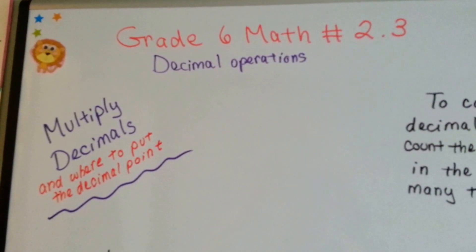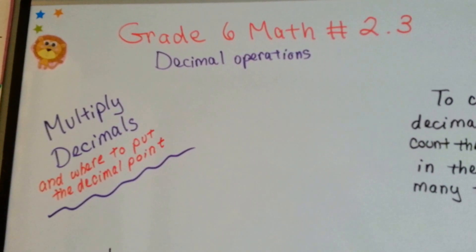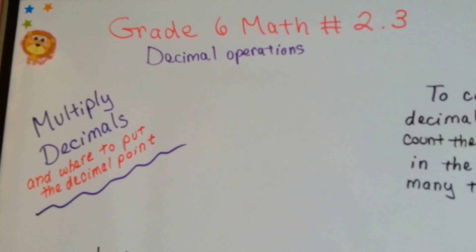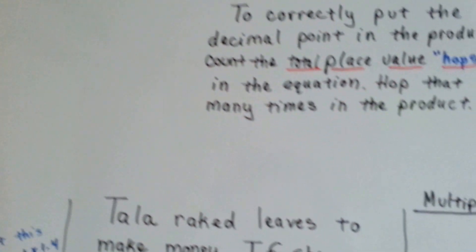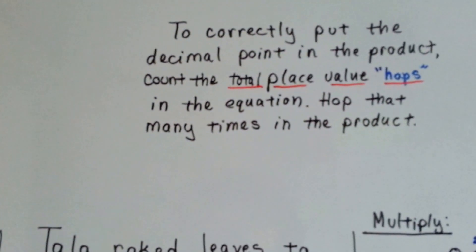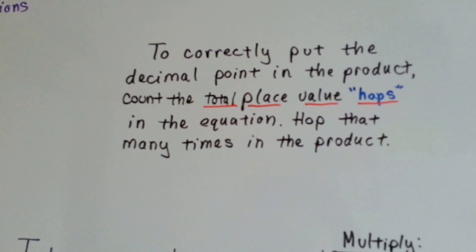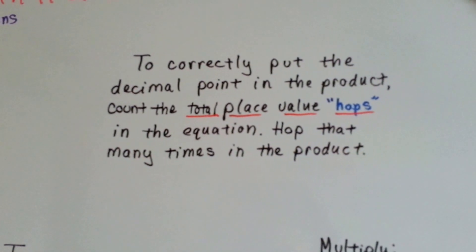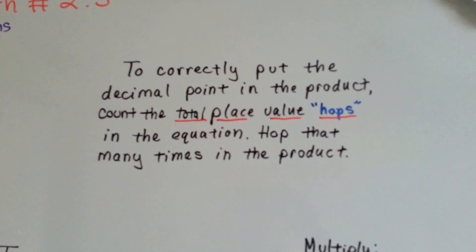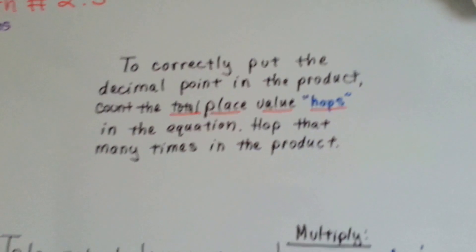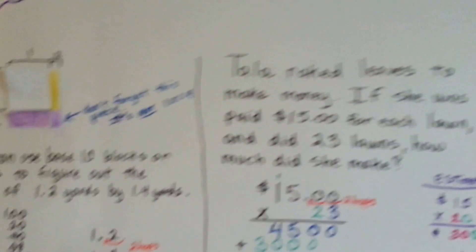Grade 6 math, number 2.3: multiply decimals and where to put the decimal point. To correctly put the decimal point in the product, we just count the total place value hops in the equation and hop that many times in the product. I'm going to show you a model first.